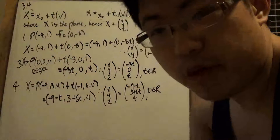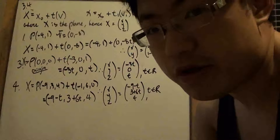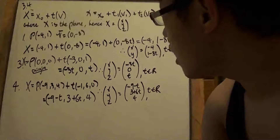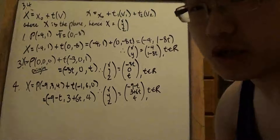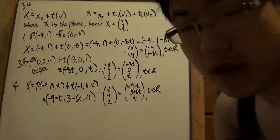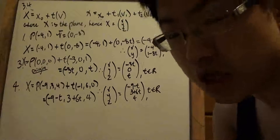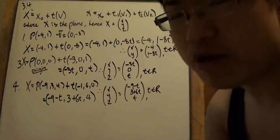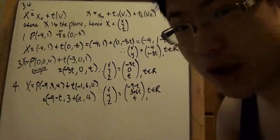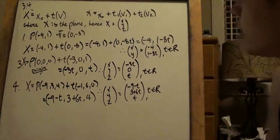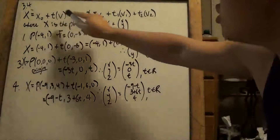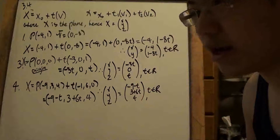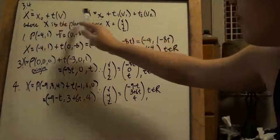Hi, welcome back to Section 3.4 for Linear Algebra 1203. The sections are pretty straightforward — we just have to deal with a couple of equations that we're going to use as a bedrock foundation to solve all other questions. So relatively easy, unlike 3.3 where we had to go through a lot of formulas. The only thing you really have to worry about is these two equations.